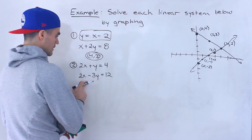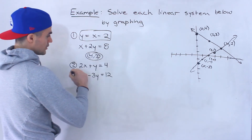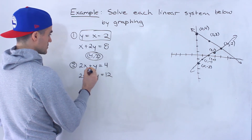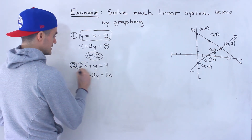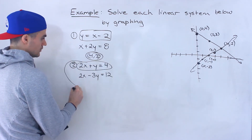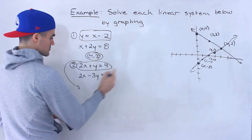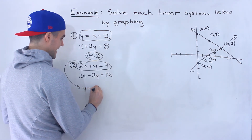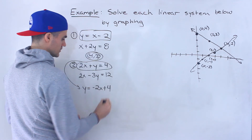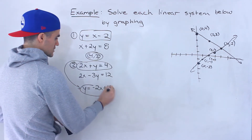Now this second set of lines — notice they're not in y equals mx plus b form, so if we convert them, let's take this line first. Notice to isolate for y it's easy — just bring the 2x over. So we'll have y equals negative 2x plus four. That would be the first line.